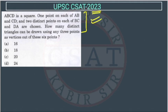So what is the question? ABCD is a square. Just draw it. So this is A, B, C, D. This is a square.